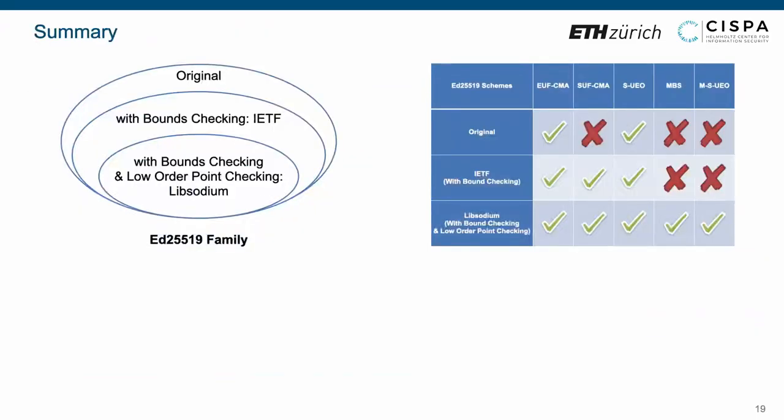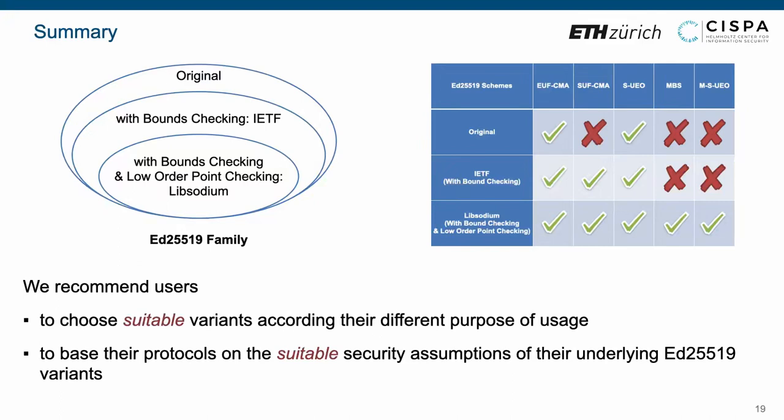In the end, we would like to provide a summary for this talk. We compare the implementations of these three representative variants of Ed25519. Besides, we disclose the different security guarantees achieved by these three variants, including unforgeability and resilience to key substitution attacks. Based on these conclusions, we recommend users to choose suitable variants according to their different purpose of usage, and to base their protocols on the suitable security assumptions of the underlying Ed25519 variants.